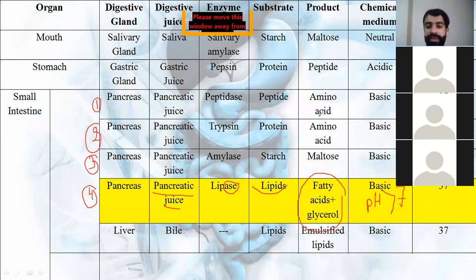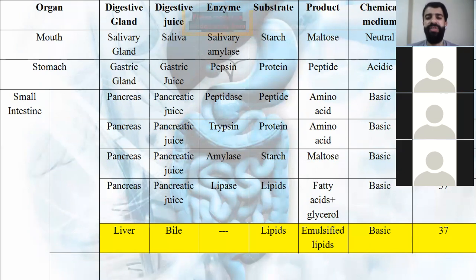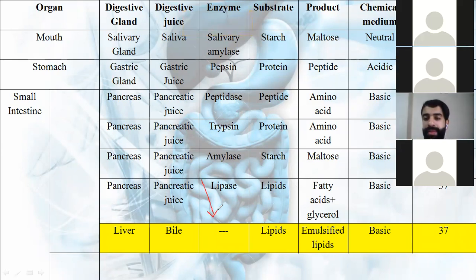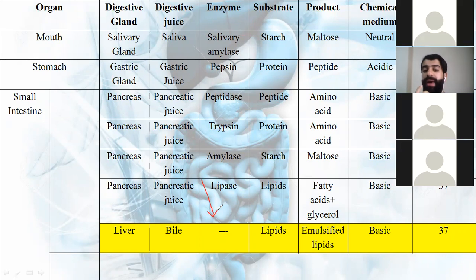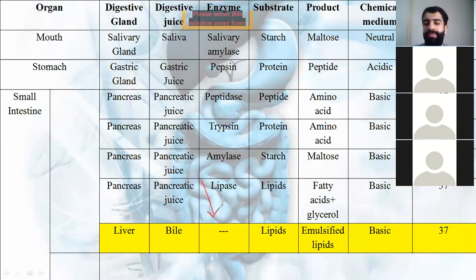Moving to the liver: the liver secretes bile. What is the name of the enzyme in bile? Tia correctly answers from watching the video: there is no enzyme. Bile contains no enzymes. Bile is the only juice that contains no enzyme. Very good, Tia — that earns a plus one. This was mentioned in the pre-class video.